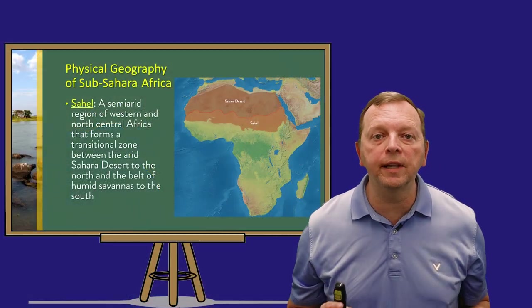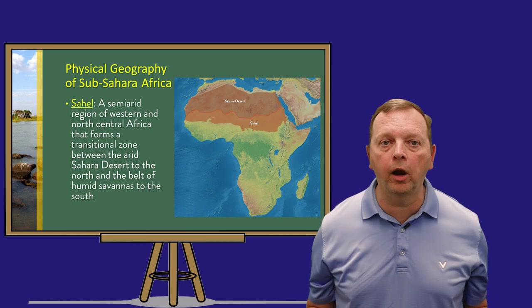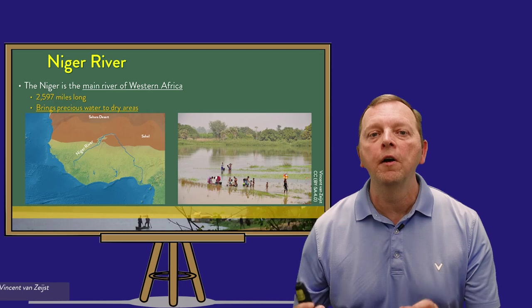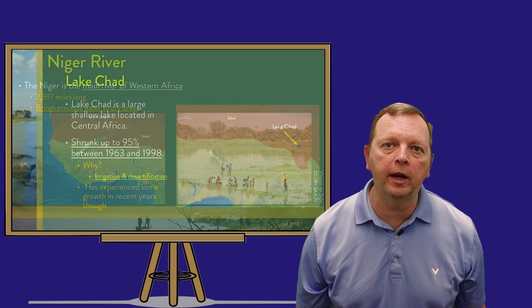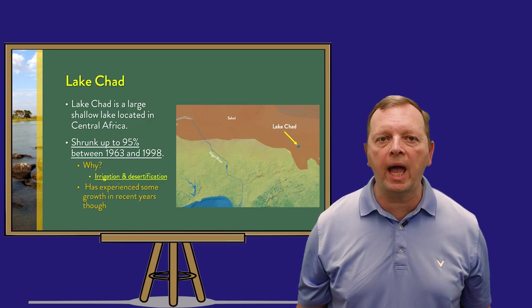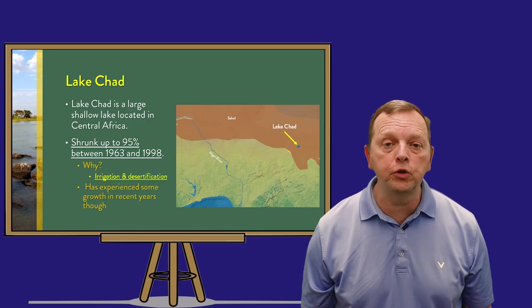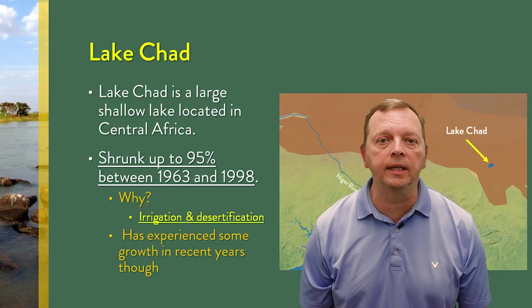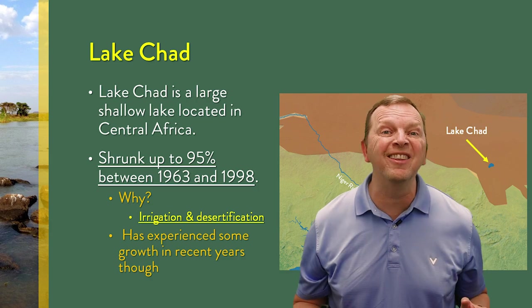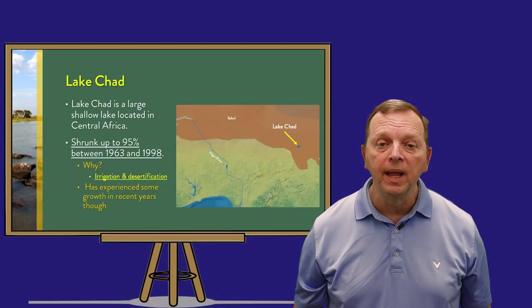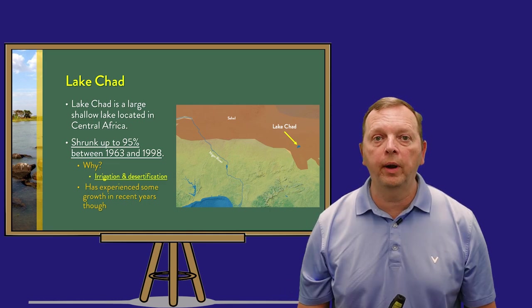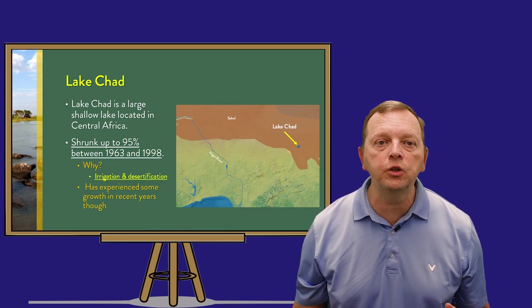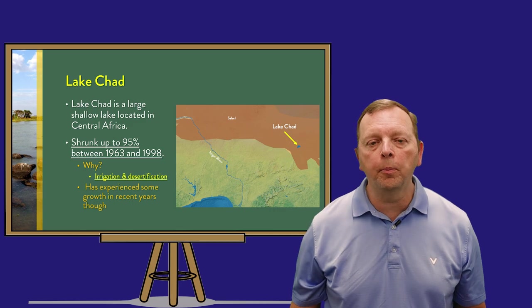The Sahel will receive less than 20 inches of rain during the year. Fortunately for the people of Western Africa, the Niger River flows through the region to provide needed water. Another body of water in the Sahel is Lake Chad. Unfortunately, between 1963 and 1998, Lake Chad lost about 95% of its water. Just like the Aral Sea, this is a result of the diverting of water for irrigation and the desertification we see within the Sahel.